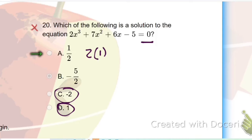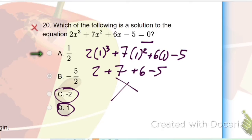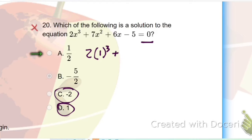So we can do like 2 times 1³ plus 7 times 1² plus 6 times 1 minus 5 and work it out. 2 times 1 is 2 plus 7 times 1 is 7 plus 6 times 1 is 6 minus 5. And we can visually see that that's not going to equal 0. So yeah, the same thing with negative 2.